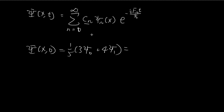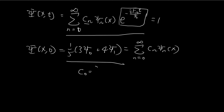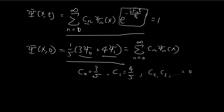Now we can compare this with the coefficients. When t is equal to 0, we substitute t=0 into the time-dependent expression, so the exponential term just becomes 1, because e to the power of 0 is 1. On the right-hand side, you have the linear combination of all the stationary states. Comparing coefficients, c0 has to be 3 over 5, and by the same logic c1 is equal to 4 over 5. All the subsequent terms, all the way to c infinity, they're all equal to 0. Under these conditions, this initial wave function will be satisfied.